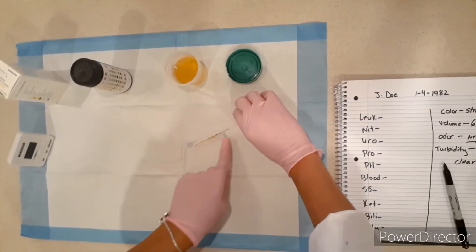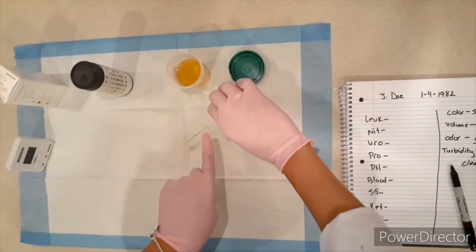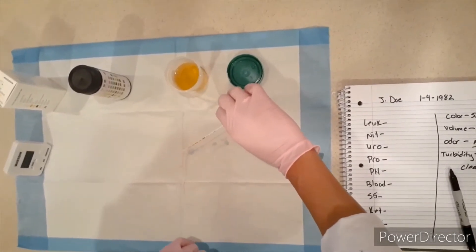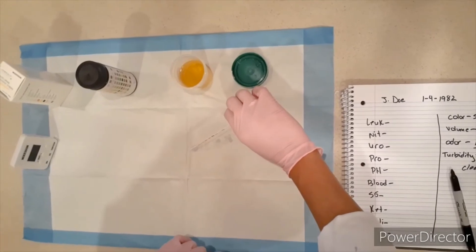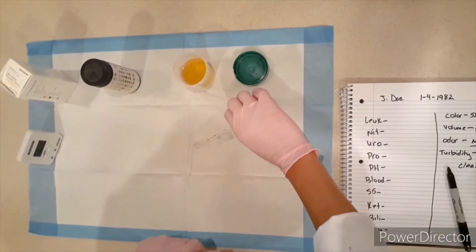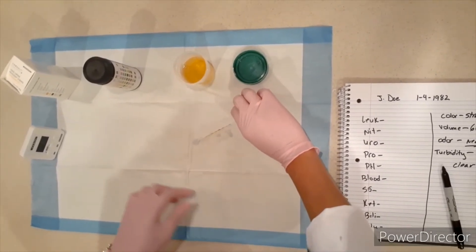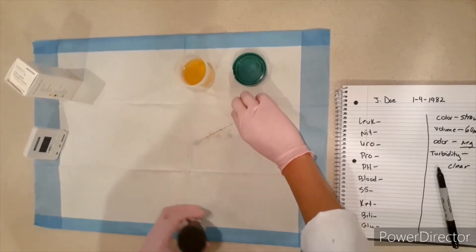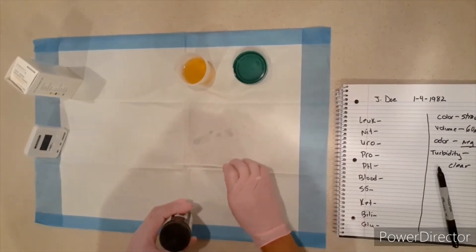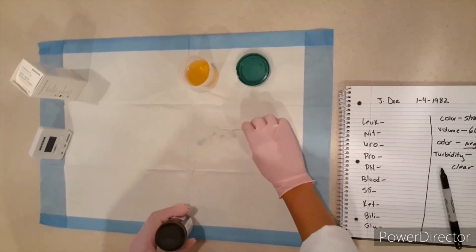We don't want runoff of urine to get on any of the boxes above or below. So we'll keep it horizontal. I'm at almost 15 seconds now. So once I hit 30, I'm going to go ahead and get ready to record my glucose and my bilirubin at 30 seconds.